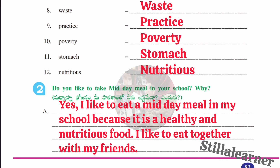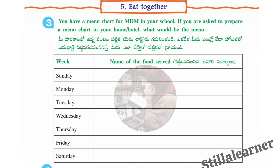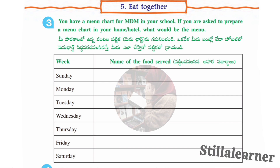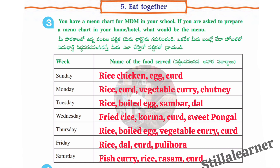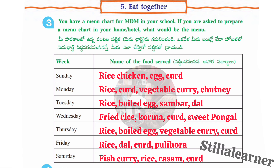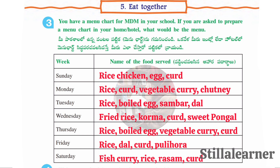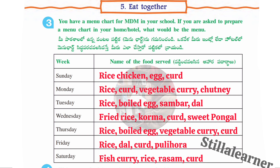The third section asks you to prepare a menu chart for your home or hotel. The example menu is: Sunday — rice, chicken, egg, curd; Monday — rice, curd, vegetable curry, chutney; Tuesday — rice, boiled egg, sambar dal; Wednesday — fried rice, korma, curd, sweet pongal; Thursday — rice, boiled egg, vegetable curry, curd; Friday — rice, dal, curd, pulihora; Saturday — fish curry, rice, rasam, and curd.